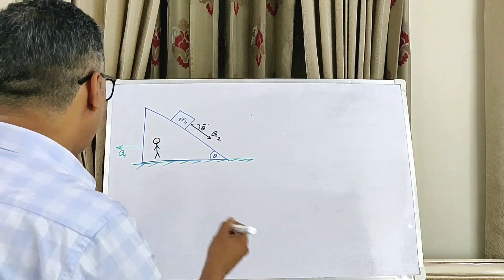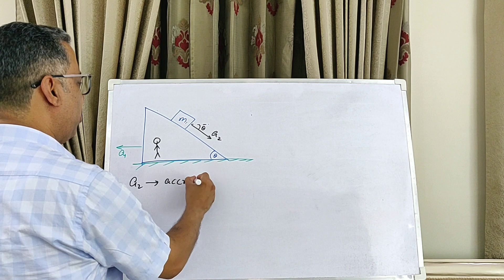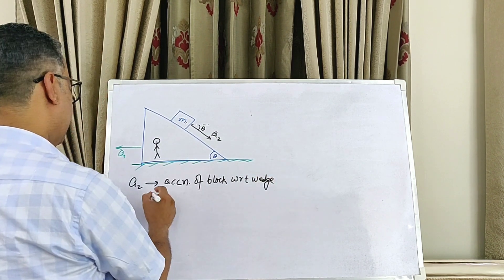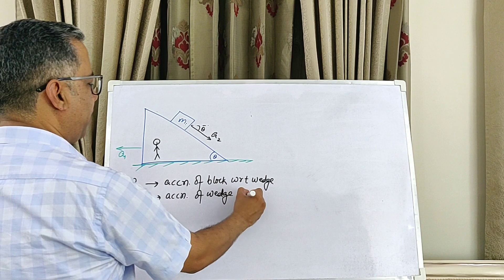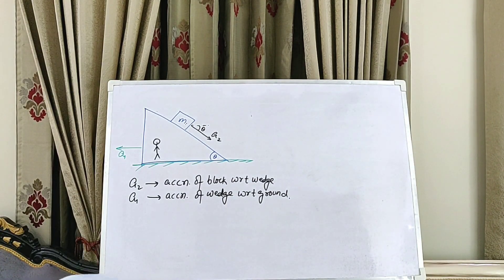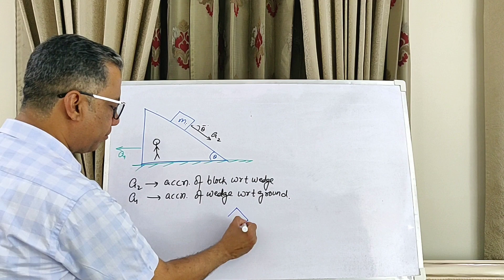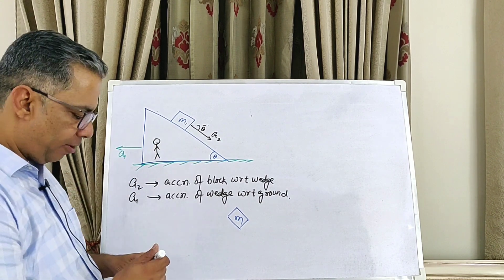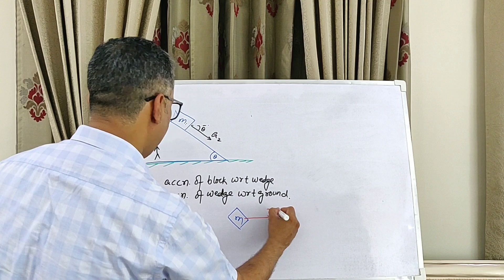A2 is the acceleration of the block with respect to the wedge, and A1 is the acceleration of the wedge with respect to the ground. Our next task is to draw the free body diagram. Since we are observing the block in a reference frame fixed to the wedge, we need to include a pseudoforce acting on the block.